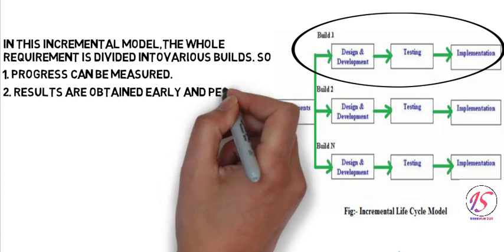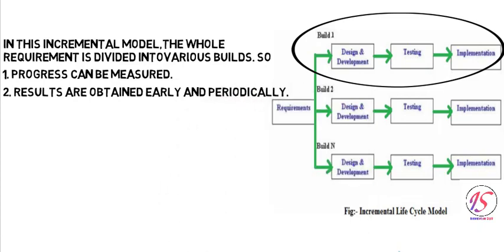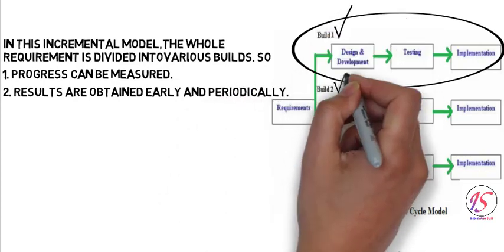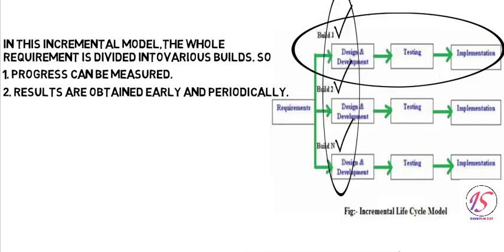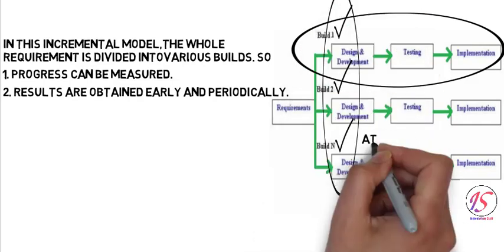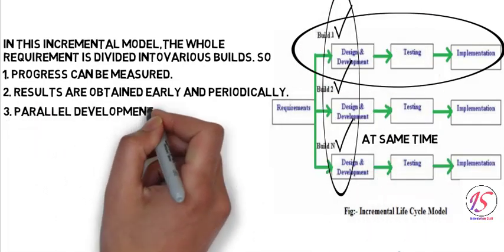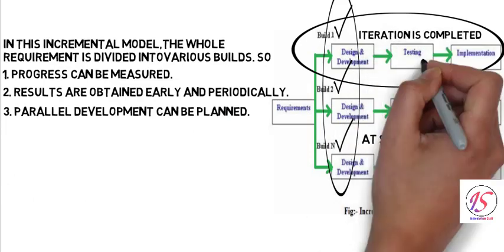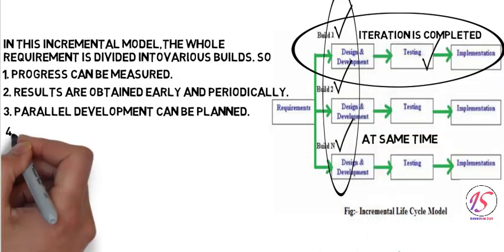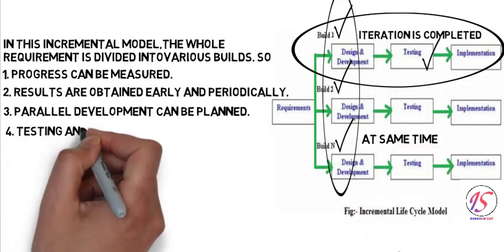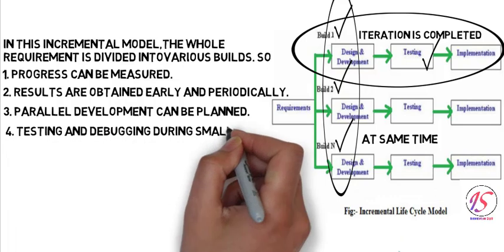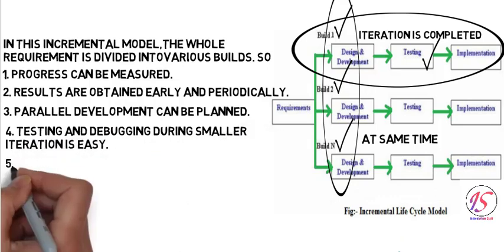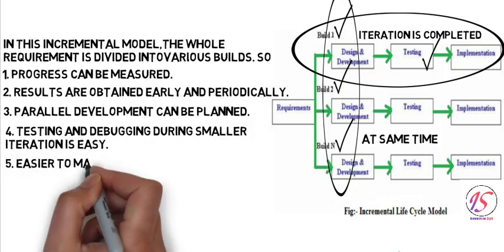More than one iteration of the software development cycle may be in progress at the same time, so parallel development can be planned. When an iteration is completed, it is easy to test that iteration instead of testing the whole software, so testing and debugging during smaller iterations is very easy.